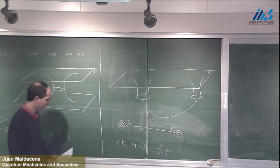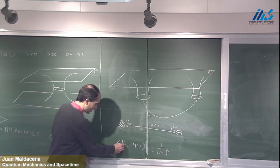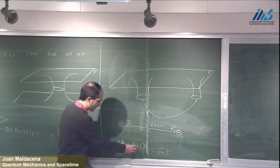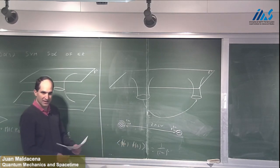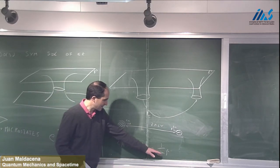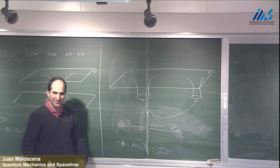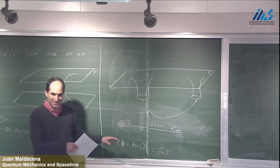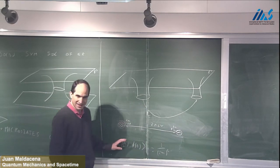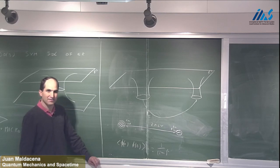To clarify the correlation interpretation: you measure the field value at point A and the field value at point B and compute their product. Repeating this experiment many times — preparing these two entangled black holes many times — and averaging gives this particular correlation function.